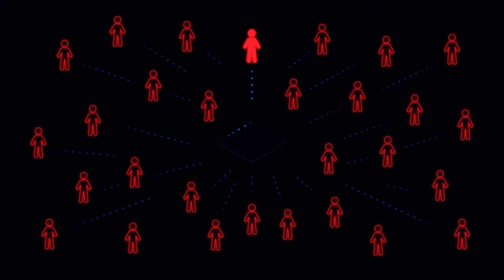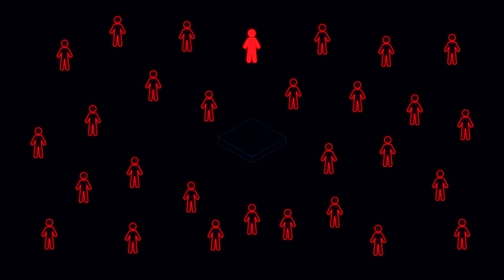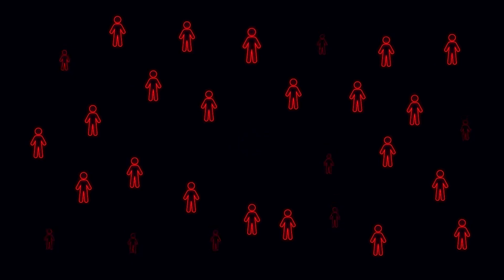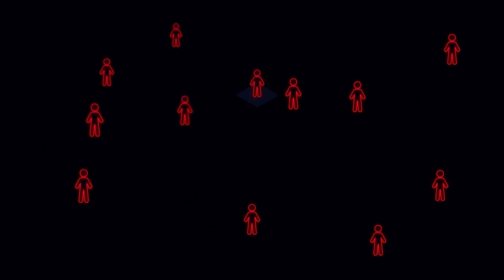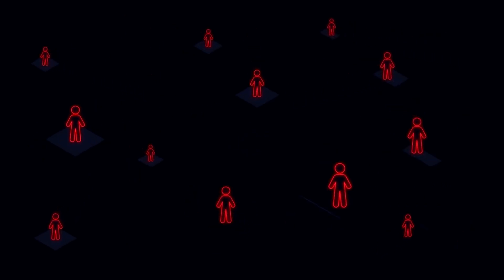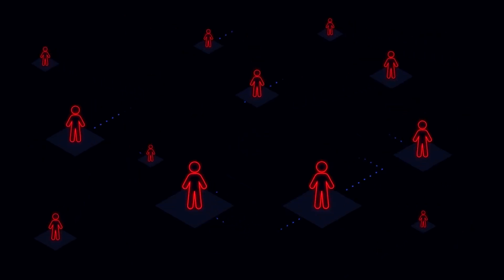The ARK public network is validated by elected delegates that run the network. ARK runs on a custom-designed delegated proof-of-stake blockchain, with 51 active delegate slots and fast 8-second block times.